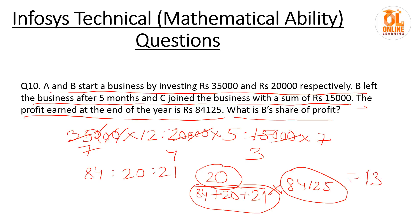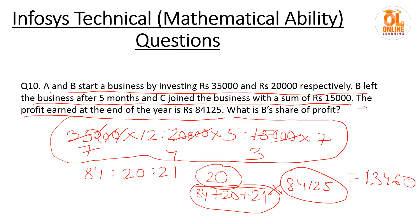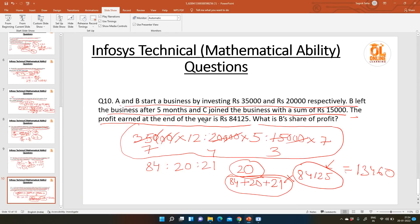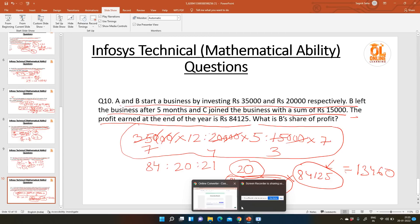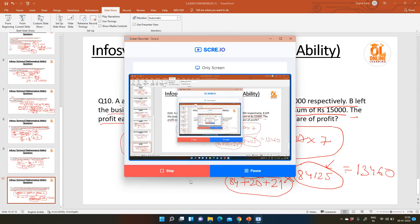Whenever this type of partnership problem comes, first find the total investment as time × amount for each partner, then take the ratio of the target person's share to total share, multiplied by total profit. Hope you liked the session — please comment which topics you want more videos on. Thank you, have a nice day!